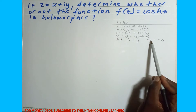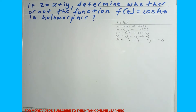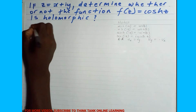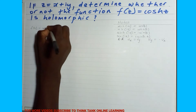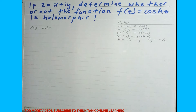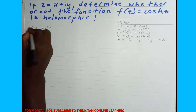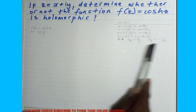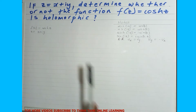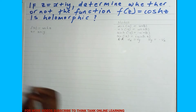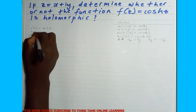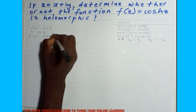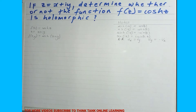The second Cauchy-Riemann equation states that the partial of u with respect to y should equal negative partial of v with respect to x. Our function is f(z) = cosh(z), which is a hyperbolic function. We know that z equals x plus iy. We want to prove these equations, and if they hold, we can say that this function is holomorphic. So f(x,y) = cosh(x + iy).